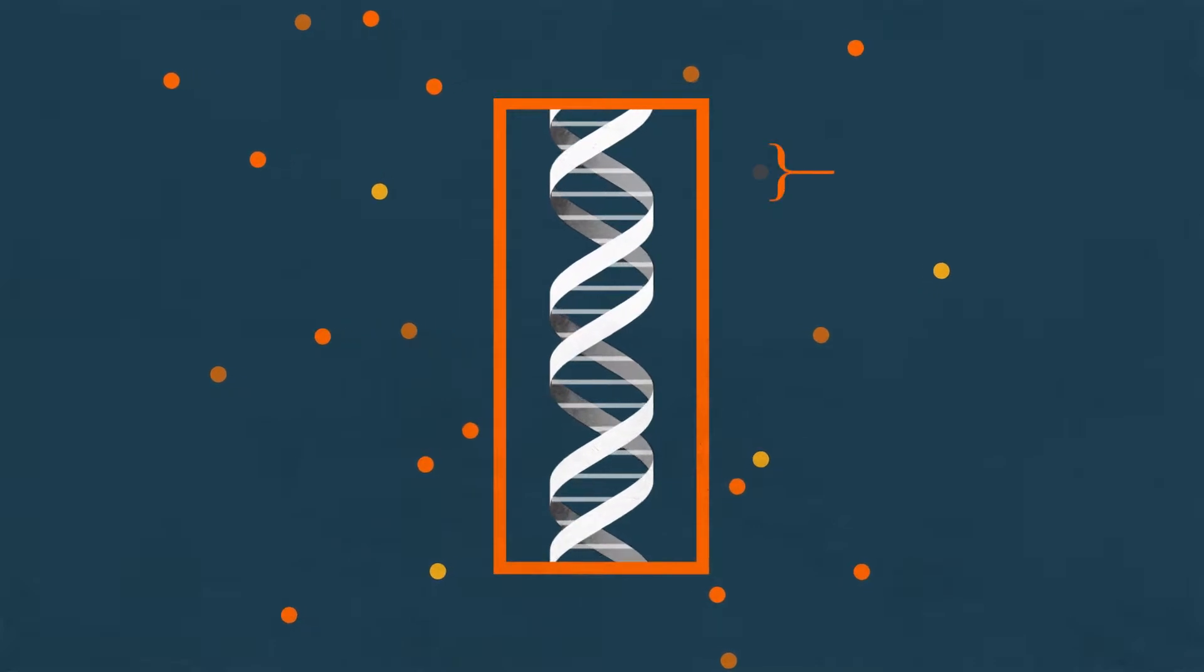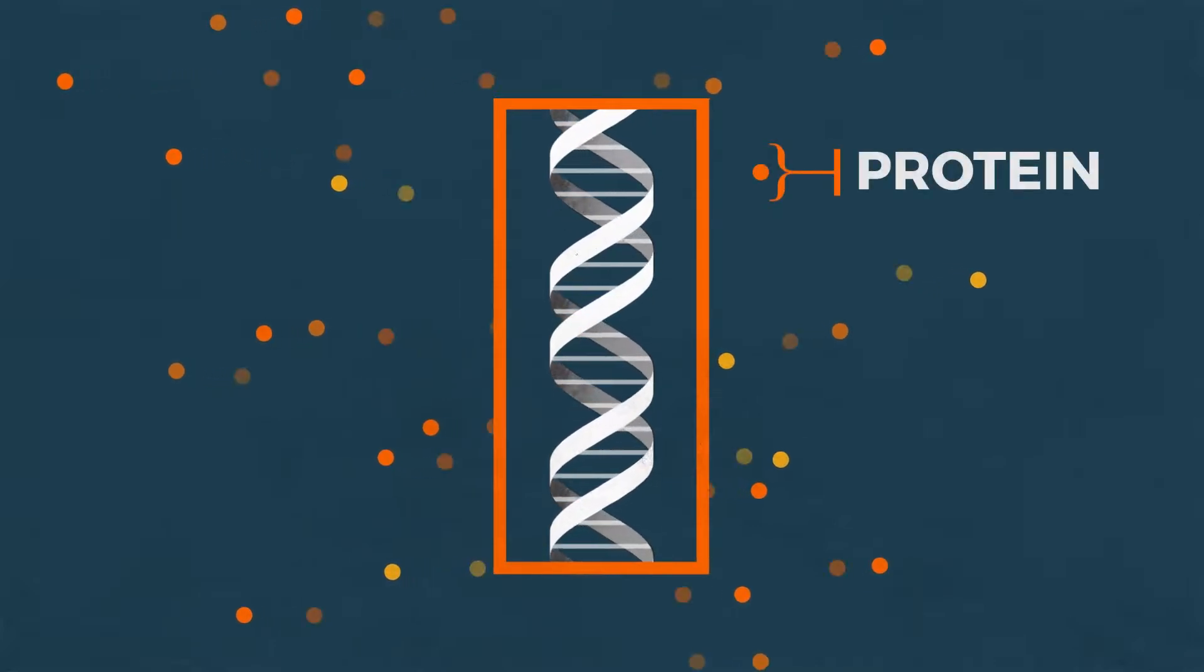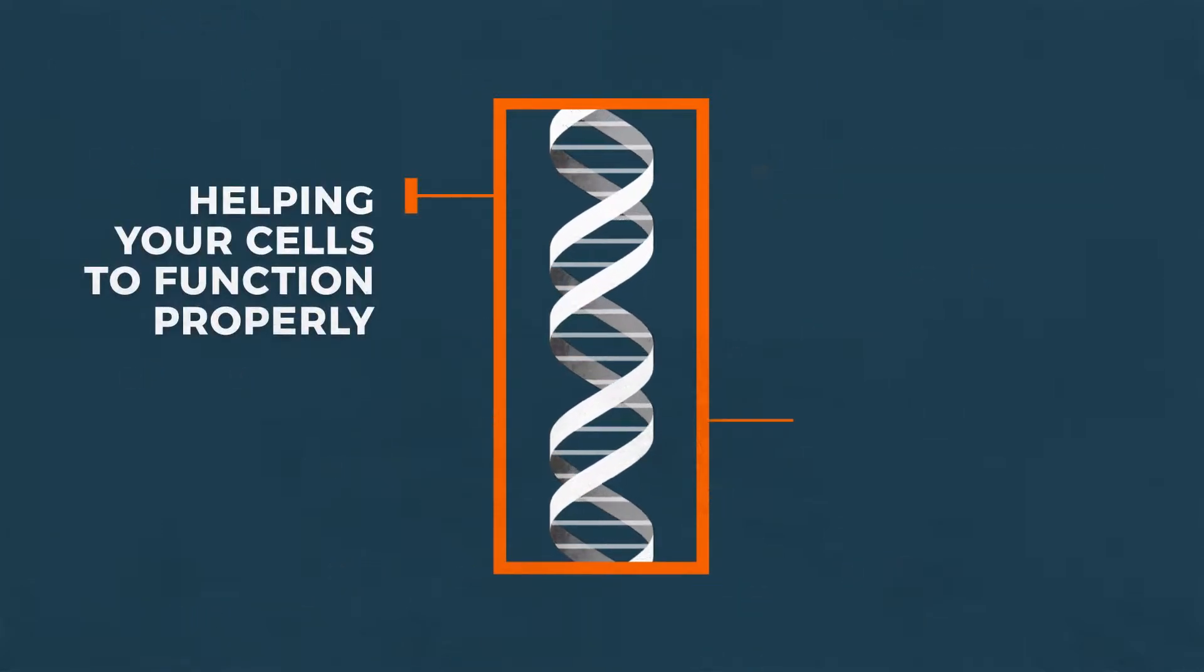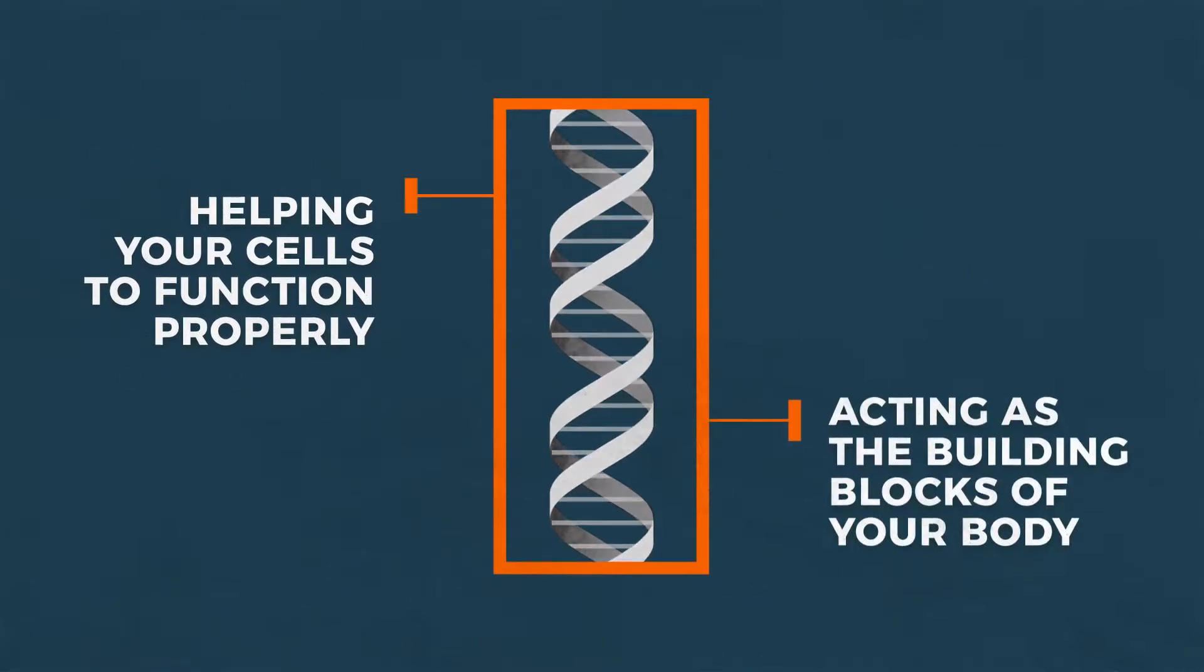Specific genes tell the body how to make specific proteins. Proteins play important roles in the body, like helping your cells to function properly or acting as the building blocks of your body.